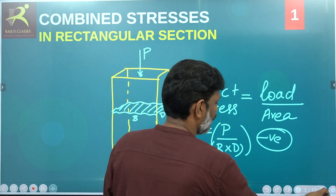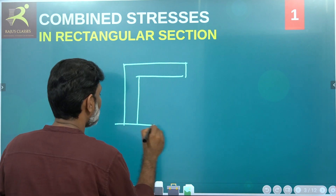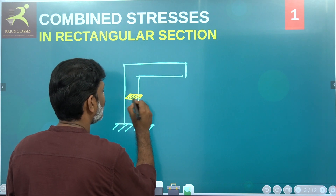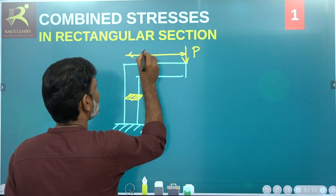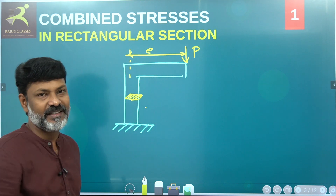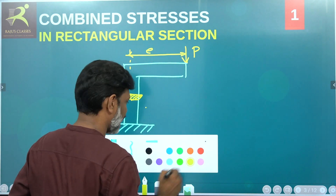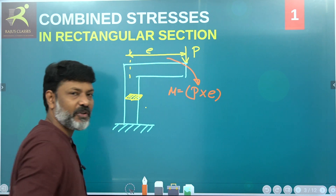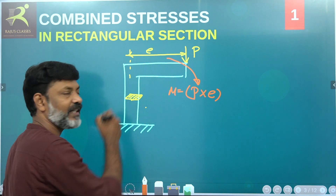What is indirect stress? For indirect stress, suppose there is a structural element with a rectangular cross section. Now I apply load P with some eccentricity from the center — not at the center but offset by eccentricity e. Not only does direct compression act, but I also try to bend the element. This creates a bending moment, and the bending moment value is P into e — that is, load multiplied by eccentricity.